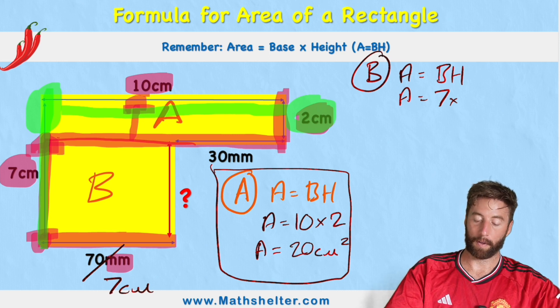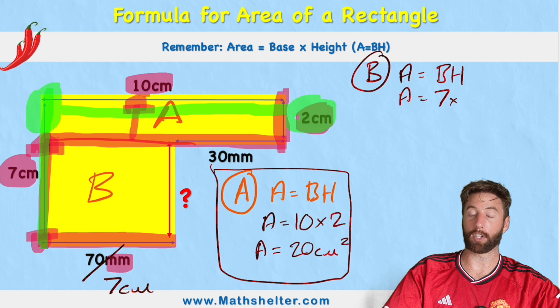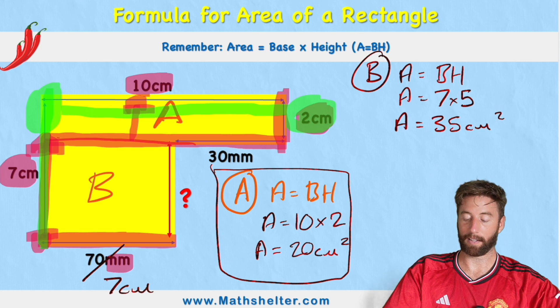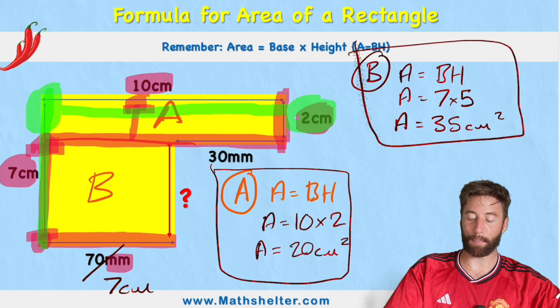So therefore, my height is going to be 7 subtract 2, which is 5. So my area equals 7 times 5, which is 35 centimeters squared. And that is the area of shape B.